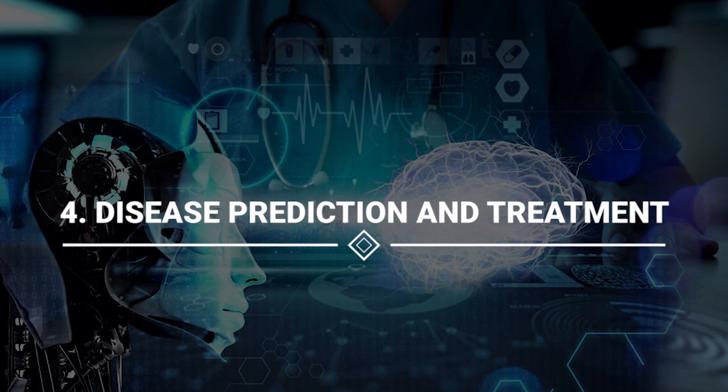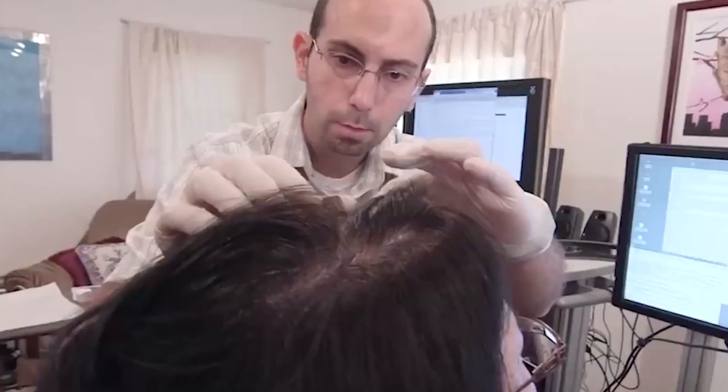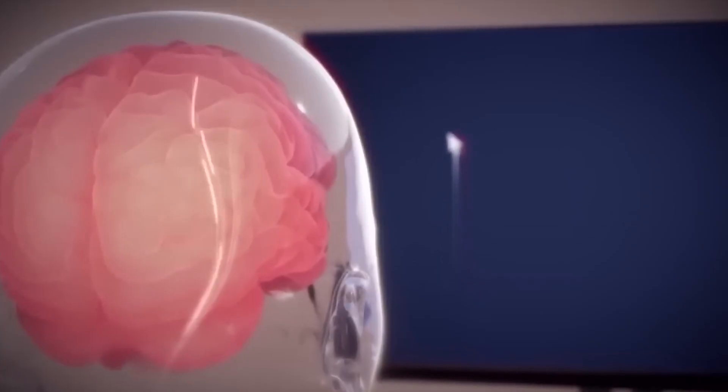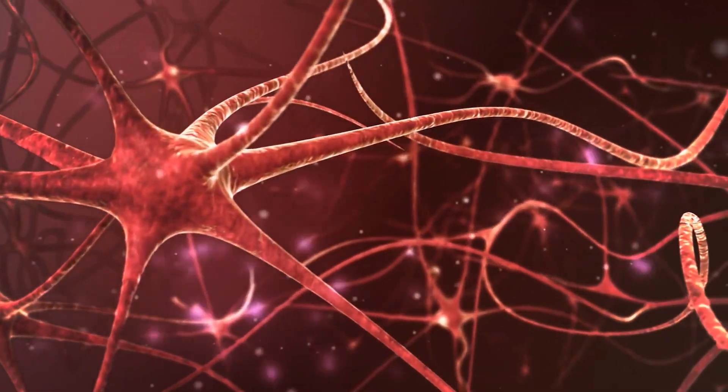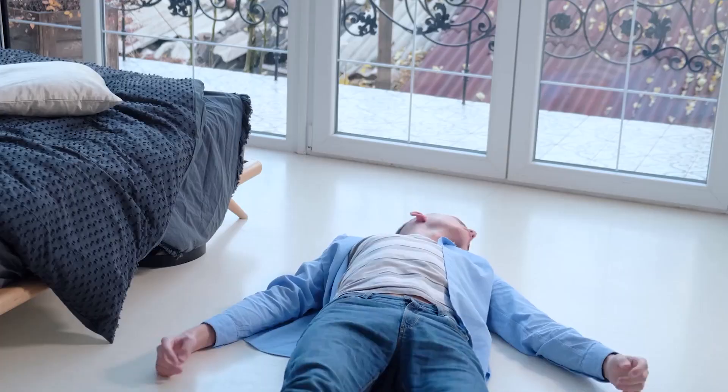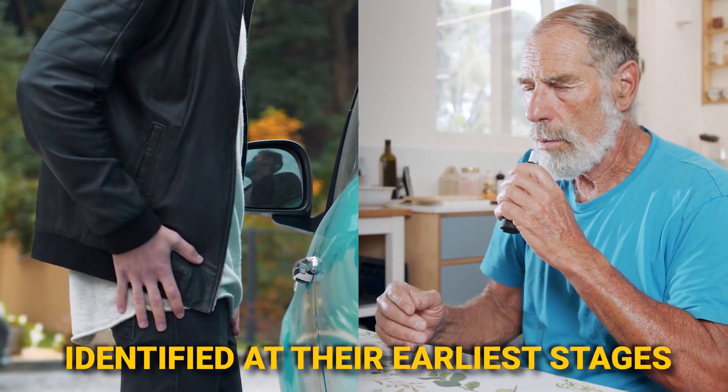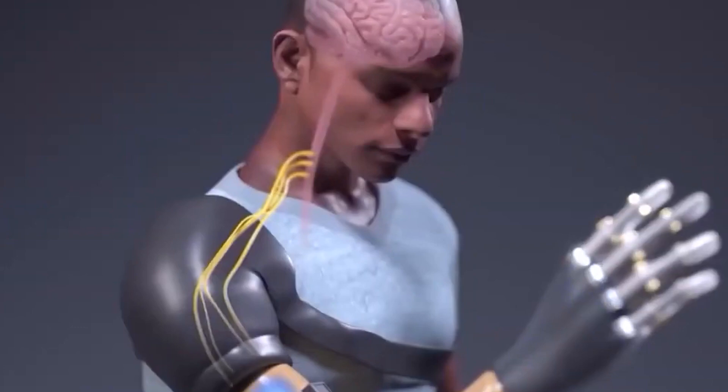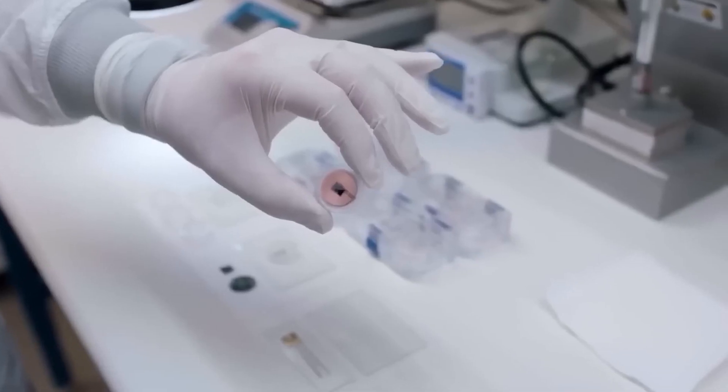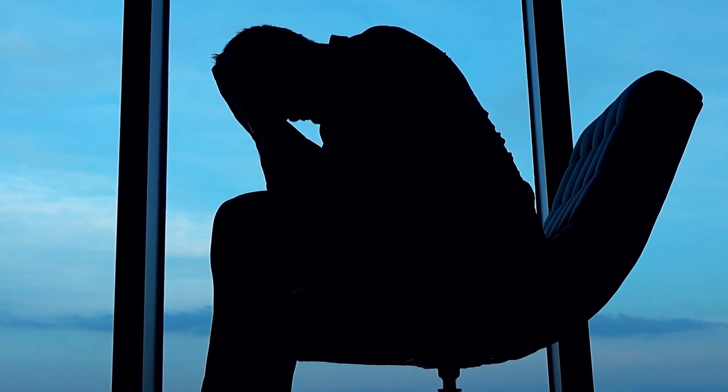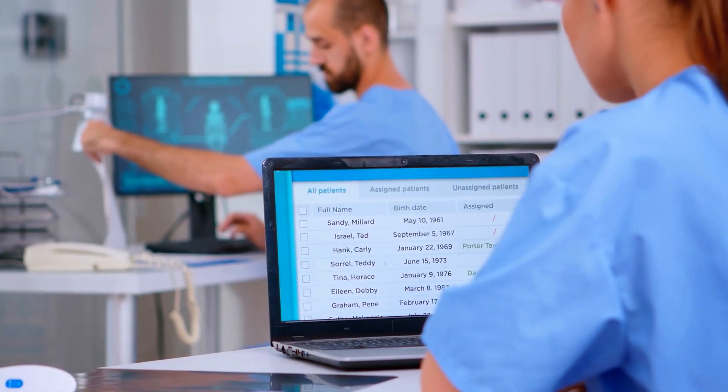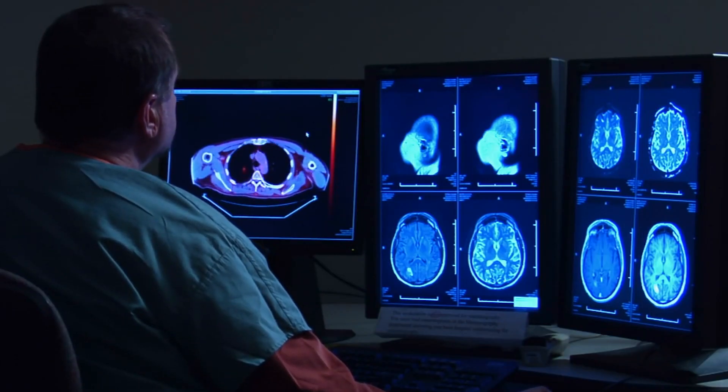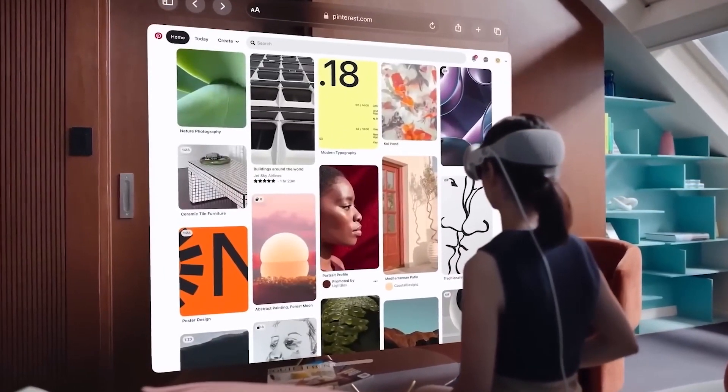4. Disease Prediction and Treatment. The potential of Neuralink's BCIs transcends restoring and enhancing. By closely monitoring brain activity, they could detect and treat various neurological conditions, even before they fully manifest. Imagine a world where diseases like epilepsy, bipolar disorder, Alzheimer's, or Parkinson's are identified at their earliest stages. Furthermore, Neuralink's BCIs could continuously monitor health symptoms, providing early intervention for conditions such as anxiety, depression, and burnout. This proactive approach to healthcare could revolutionize how we diagnose and treat diseases, potentially leading to better outcomes for countless individuals.